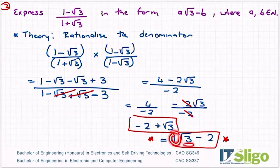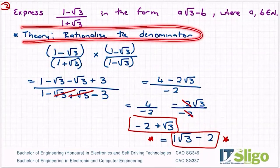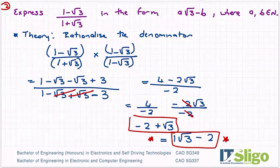So a is one, there's my root three, there's my b. But the key to these ones, you have to rationalize the denominator when you're asked to do a third.